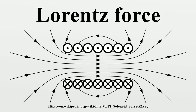Lorentz force law as the definition of E and B: In many textbook treatments of classical electromagnetism, the Lorentz force law is used as the definition of the electric and magnetic fields E and B. To be specific, the Lorentz force is understood to be the following empirical statement: the electromagnetic force F on a test charge at a given point in time is a certain function of its charge Q and velocity V, which can be parameterized by exactly two vectors E and B. Countless experiments have shown that this functional form is valid, even for particles approaching the speed of light. So the two vector fields E and B are thereby defined throughout space and time, and these are called the electric field and magnetic field.